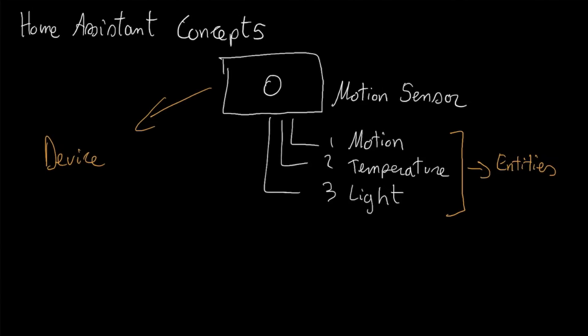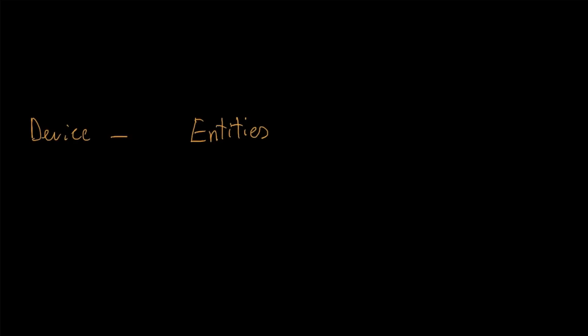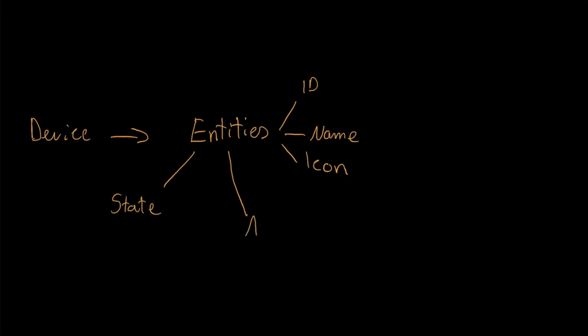In Home Assistant we normally action things from entities and read the states of the entities, so entities are the most important part to learn. An entity comes from a device, and the entity has three components: it has an ID as an identifier, it has a name, and it also has an icon. The entity itself can have a state and then a series of attributes.